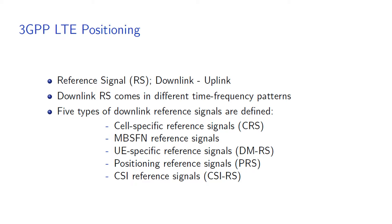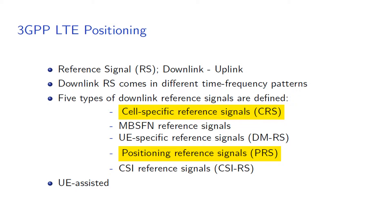In 3GPP LTE systems, a reference signal is a predefined signal pre-known to both transmitter and receiver. Uplink reference signals travel from mobile station to base station, while downlink reference signals go in the reverse direction. In total, five different varieties of downlink reference signals are defined in LTE systems. Since LTE release 9, the positioning reference signal (PRS) and cell-specific reference signal (CRS) are used in user equipment-assisted positioning methods.